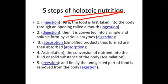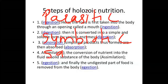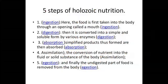So, how many types of heterotrophic nutrition have we learned till now? There are four types of heterotrophic mode of nutrition.